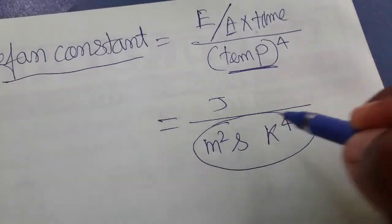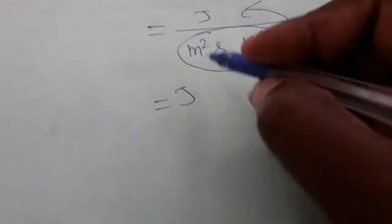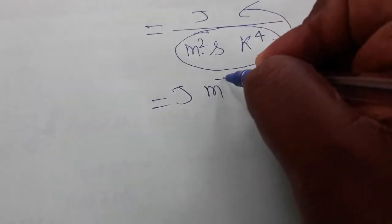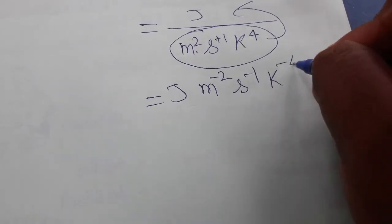From denominator I am taking everything as a numerator. That means joules meter plus 2 we are getting as a minus 2, plus 1 we are going to take it as a minus 1, Kelvin we are taking as a minus 4.